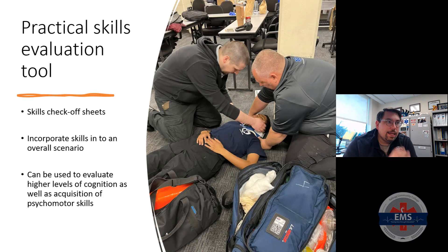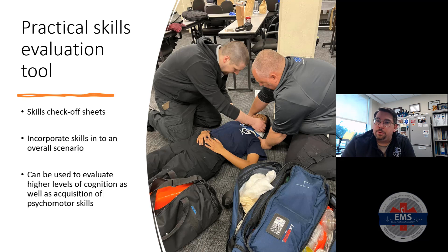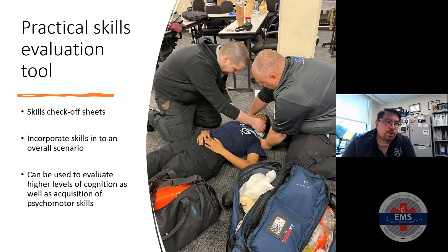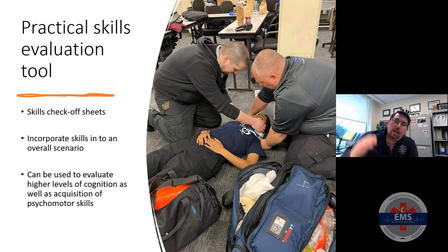For practical skills, you need different evaluation tools — things like skill checkoff sheets. With the new psychomotor competency portfolios and student minimum competencies, those are there to help you establish basic skills. You'll start out teaching individualized skills and then eventually incorporate more than one skill as students progress into scenario learning. This is a great tool for evaluating higher levels of cognition as well as acquisition of psychomotor skills and affective evaluation. It gives a better understanding of where students are going and how well they're progressing, helping them climb that pyramid from lower-order to higher-order thinking.